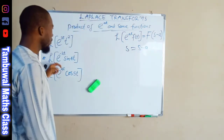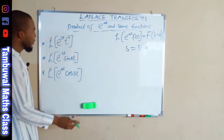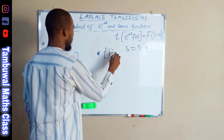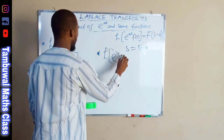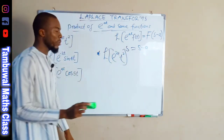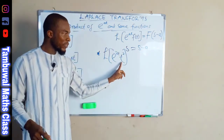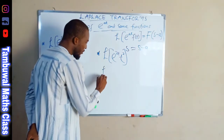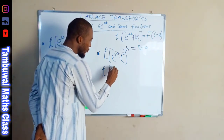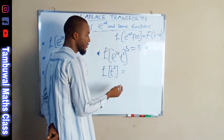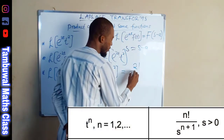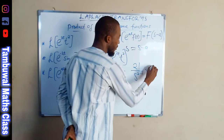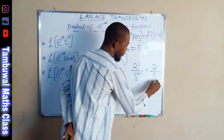Now let us see how we can find the Laplace transform of three functions. The first one: we are asked to find the Laplace transform of e^(3t) times t squared. We are going to find the Laplace transform of t squared, then replace s by s minus three. The Laplace transform of t squared is two factorial divided by s to the power of two plus one, which equals two over s cubed.